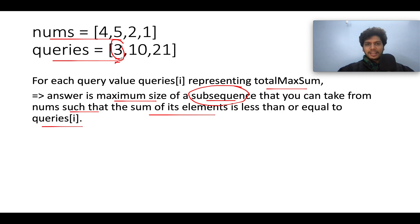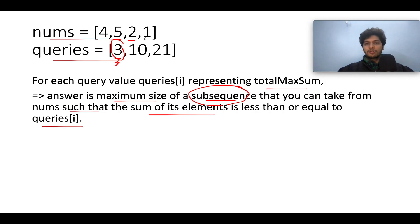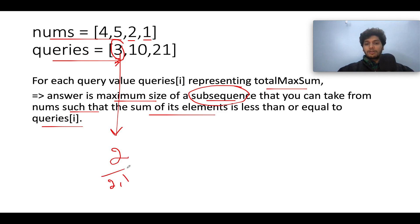The first case says the maximum total sum must be less than or equal to 3. How many elements can you pick from nums such that the total remains less than or equal to 3? There are two such elements: 1 and 2, so the answer corresponding to this query is 2, and those two elements are 2 and 1. Remember, ordering doesn't matter because it is a subsequence.